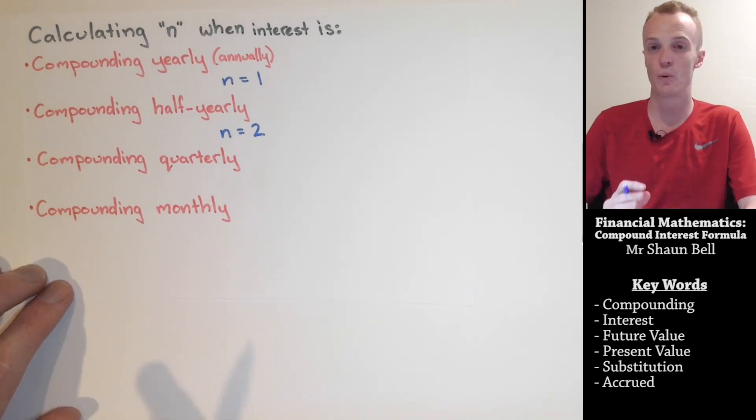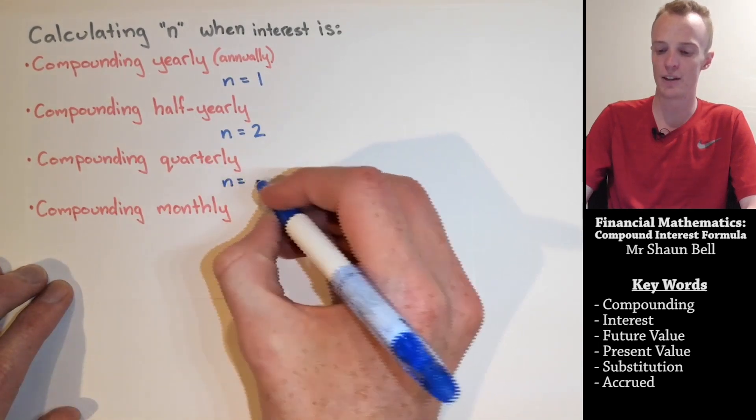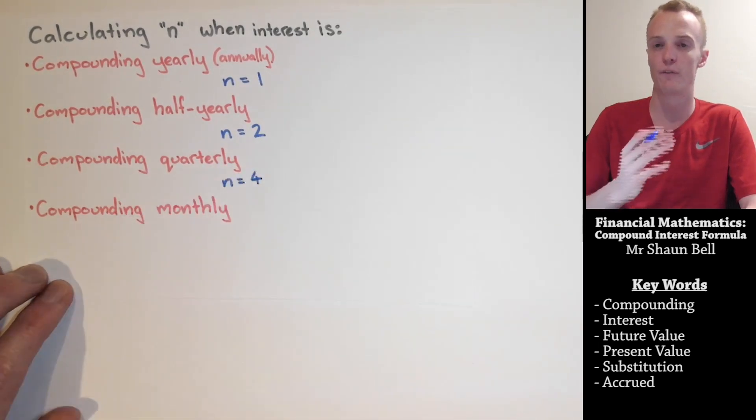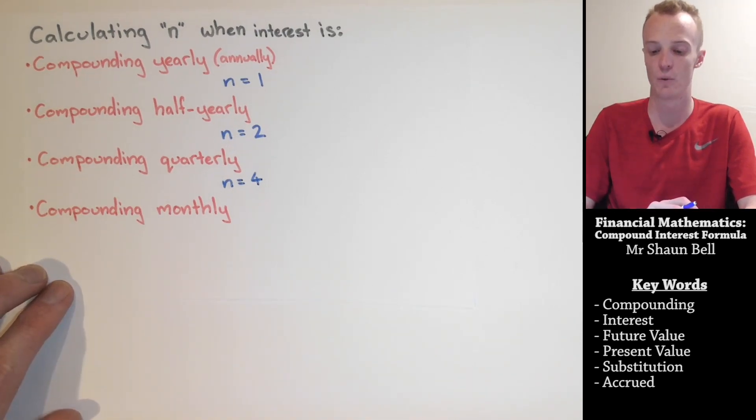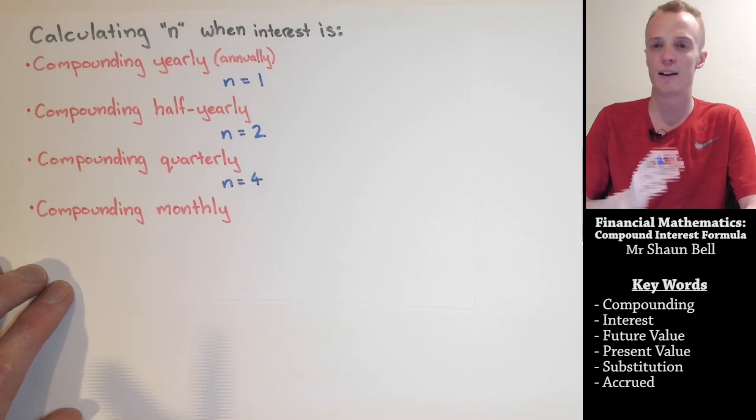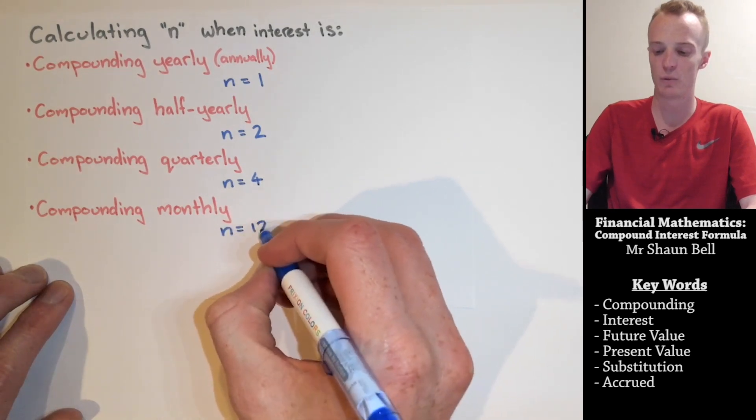When interest compounds quarterly, the interest is applied once every three months. Now, there's 12 months inside of a year, so that means the interest is applied or the interest compounds a total of four times each year, so our n value is equal to four. When the interest compounds monthly, it applies each month. Now there's 12 months in a year, so our n value is going to be equal to 12.